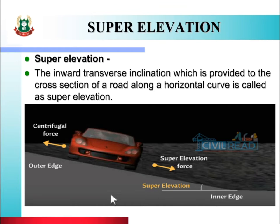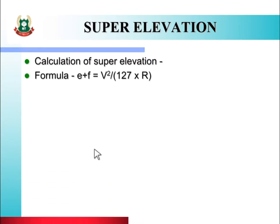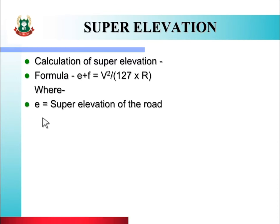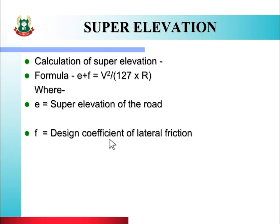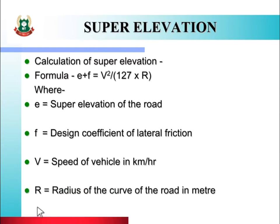Next we will see how super elevation is calculated. The formula used is: E + F = V² / 127R, where E is the super elevation of the road, F is the design coefficient of lateral friction, V is the speed of the vehicle in km/h, and R is the radius of the curve of the road in meters.